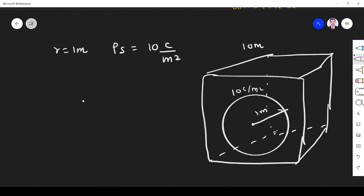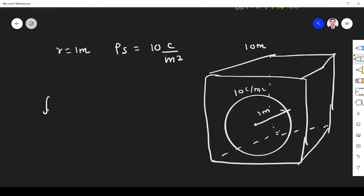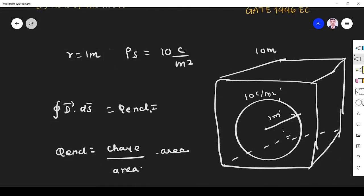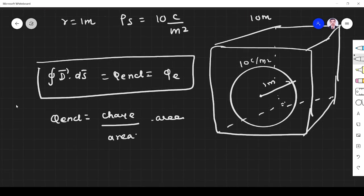What they're asking for is electric displacement. As per Gauss law, ∫D·dS equals Q enclosed. Displacement is charge per area times area, which gives electric flux. Flux is nothing but charge enclosed - that's what Gauss law states. The electric flux equals the charge enclosed.